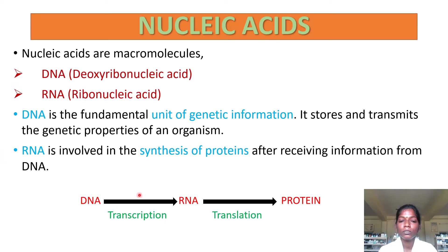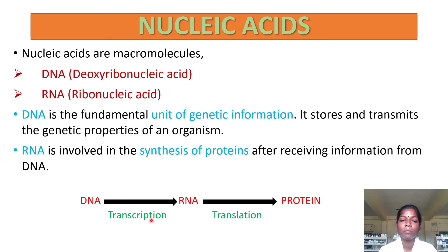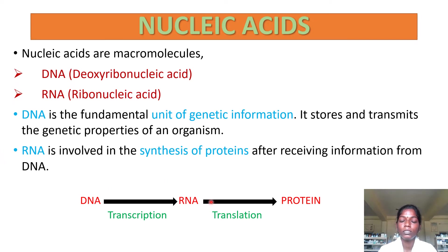This is the process that takes place in the synthesis of protein. First, DNA transcribes the information to RNA. This form of RNA is named mRNA, which stands for messenger RNA. This process is named transcription. After the formation of mRNA, it gets involved in the synthesis of protein with the help of tRNA and the ribosome. This process is named translation. This is how DNA gets involved in the synthesis of protein.